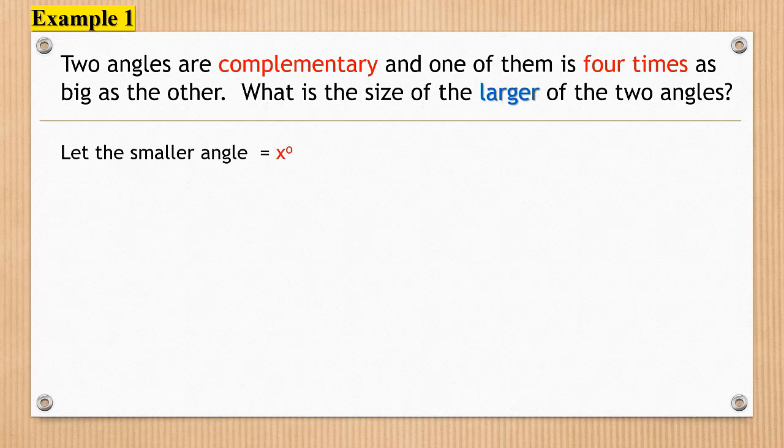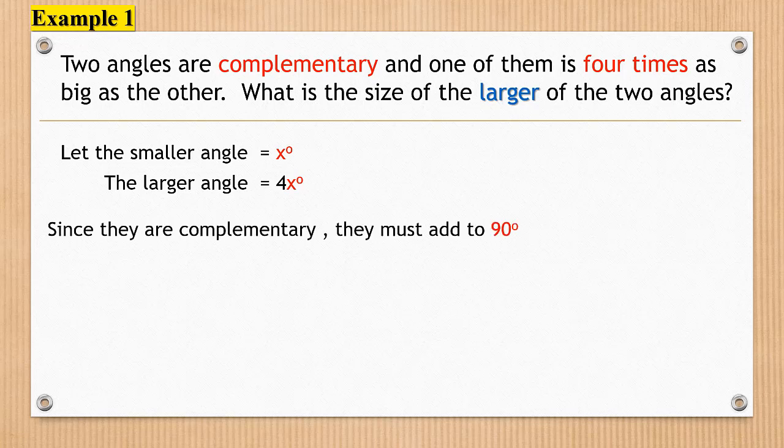To solve this, we let the smaller angle be x degrees. The larger angle is four times x degrees. Since they are complementary, they must add to 90 degrees. So x degrees plus 4x degrees is equivalent to 90 degrees.